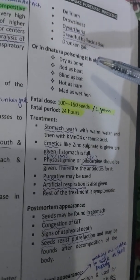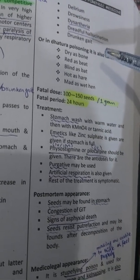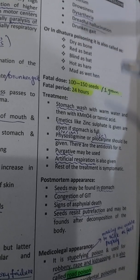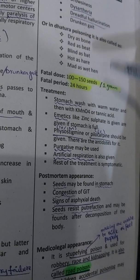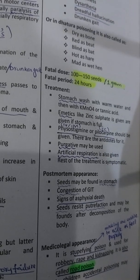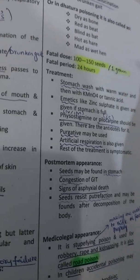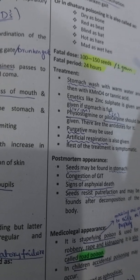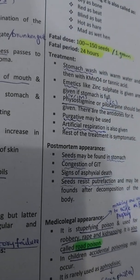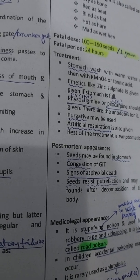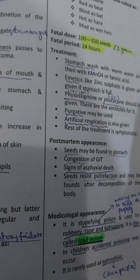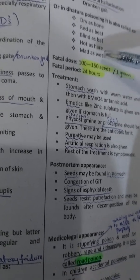Additional D symptoms not yet covered include: dysarthria and dreadful hallucinations. These symptoms are also seen in atropine poisoning, since atropine is among the active principles of Dhatoura — Dhatourain contains some traces of atropine, so atropine poisoning symptoms overlap.